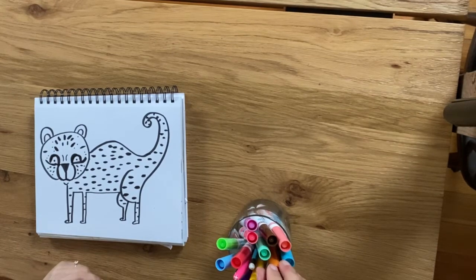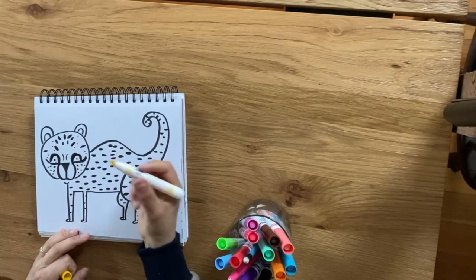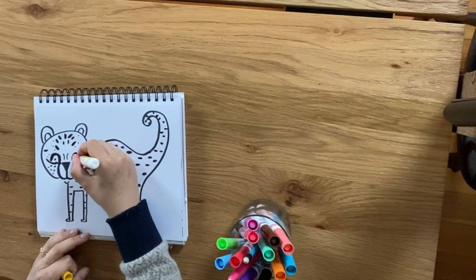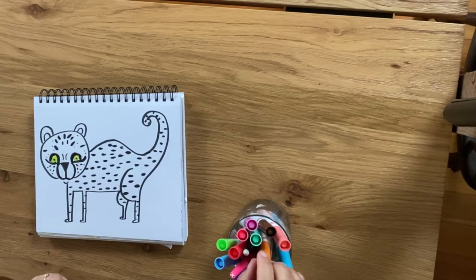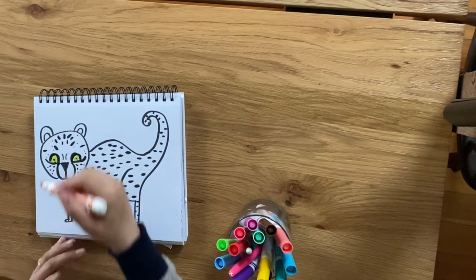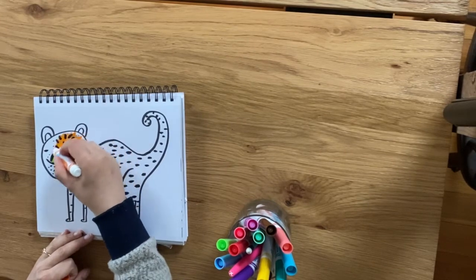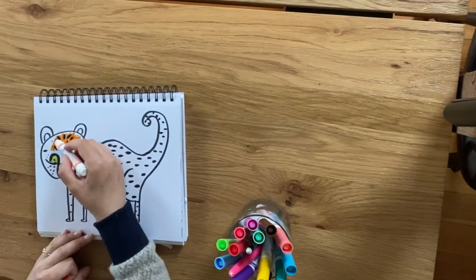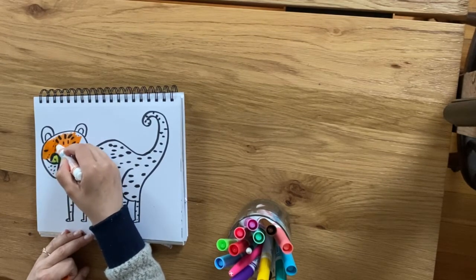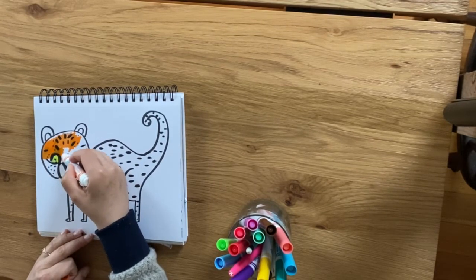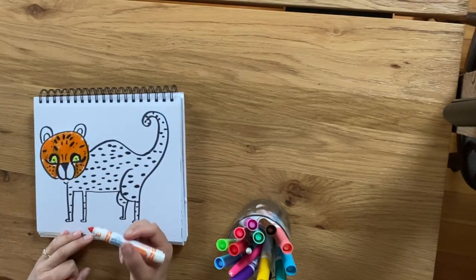A cheetah has really light eyes, so I'm going to use yellow and I'm going to color in the eyes yellow. And then the rest of the cheetah is mostly orange and white. So I'll take my orange marker and I can even color right on top of the black, since the black is so dark and you can still see the cheetah's spots. But I'm going to make sure I color around the eyes.